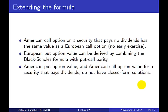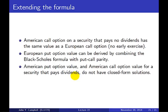Finally, some extensions of the formula. It's derived for a European call option on a security that pays no dividends. An American call option on a non-dividend-paying security has the same value — that's the no-early-exercise proposition. We can get the value of a European put by combining Black-Scholes with put-call parity. However, the American put option and the American call on a dividend-paying security do not have closed-form solutions; one can find a numerical solution computationally, but there's no expression one can write down, even one as complicated as the Black-Scholes formula. Thank you for listening, see you in class.